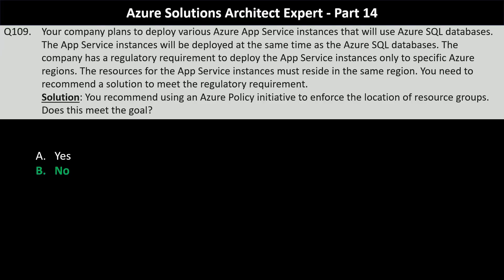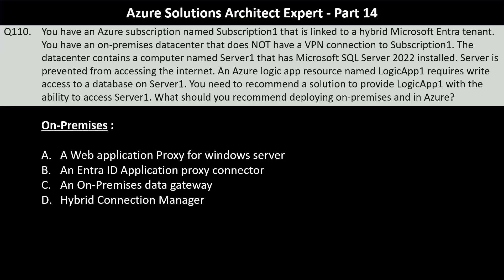Question number 110: You have an Azure subscription named Subscription 1 that is linked to a hybrid Microsoft EntraID tenant. You have an on-premise data center that does not have a VPN connection to Subscription 1. The data center contains a computer named Server 1 that has Microsoft SQL Server 2022 installed. Server 1 is prevented from accessing the internet. An Azure Logic App resource named Logic App 1 requires write access to a database on Server 1. You need to recommend a solution to provide Logic App 1 with the ability to access Server 1.